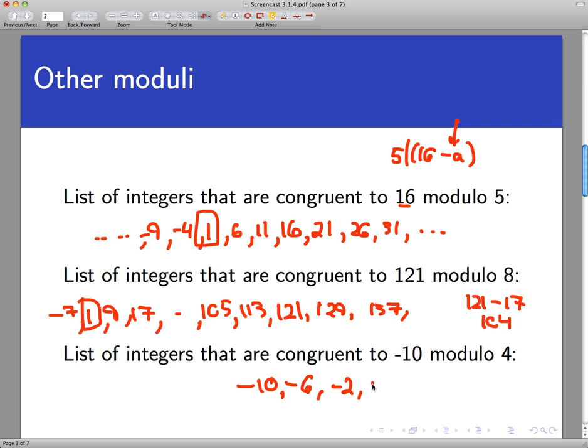And the next number up the list is positive 2. And the next one up the list would be 6 and 10. So 2 is the least non-negative, the smallest non-negative integer that is congruent to negative 10, mod 4.